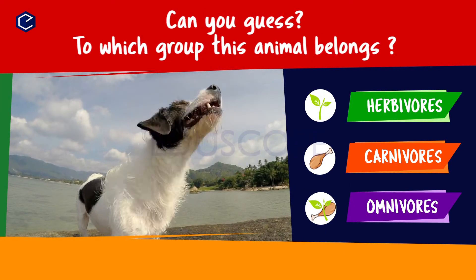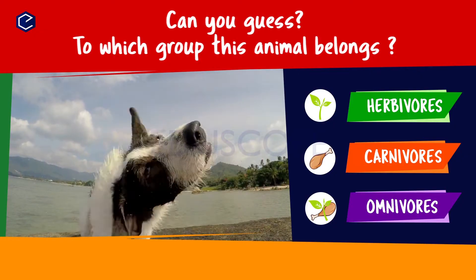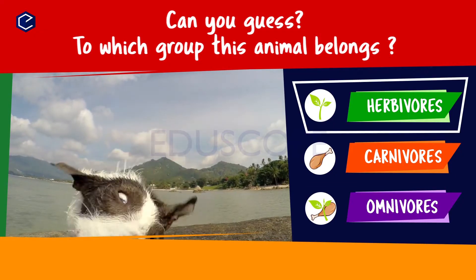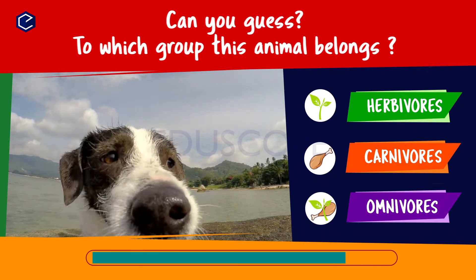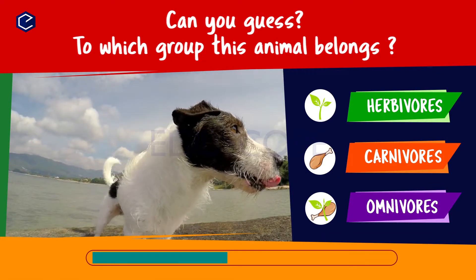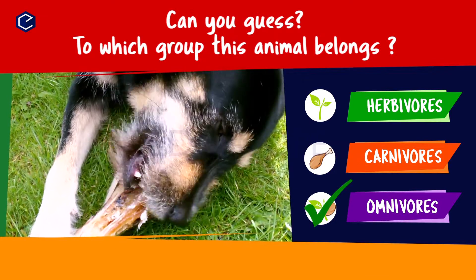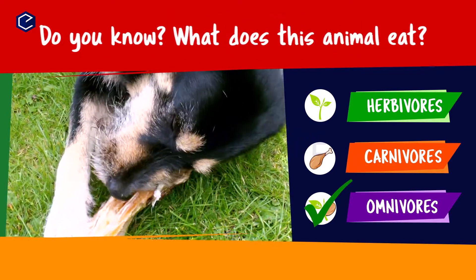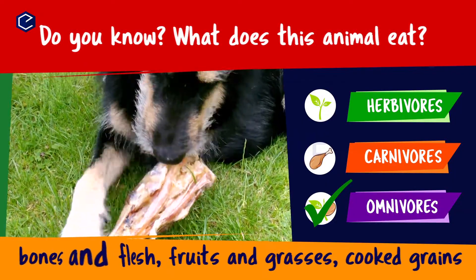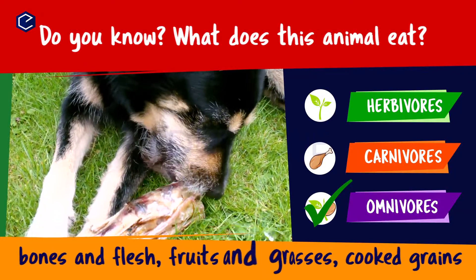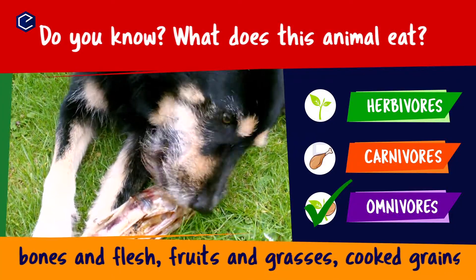Can you guess to which group this animal belongs? Herbivores, carnivores, omnivores. Do you know what this animal eats? A dog eats bones and flesh, fruits and grasses, cooked grains. So dog is an omnivore.